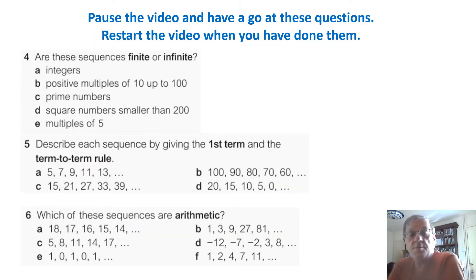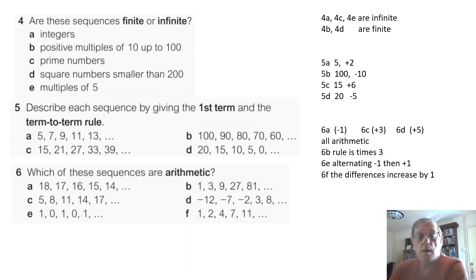OK. Again, pause the video and have a go at these questions and restart it when you have done them. So here we go. Are these sequences finite or infinite? Well, A, integers, they are just whole numbers. They go on forever. C, prime numbers. Well, there's no pattern to them, but they do go on forever. And multiples of 5e, they also go on forever. So all those are infinite. A, C and E. B and D are finite. B is the positive multiples of 10 up to 100. So that's 10, 20, 30, 40 and it stops at 100.